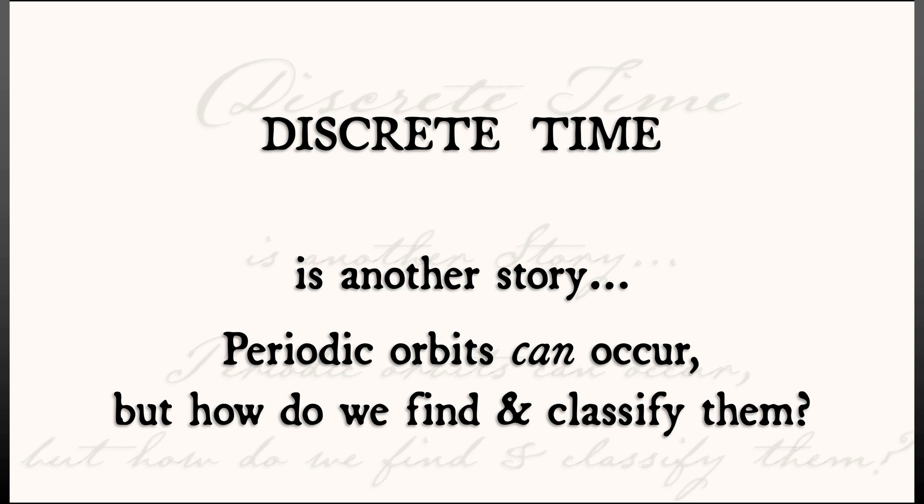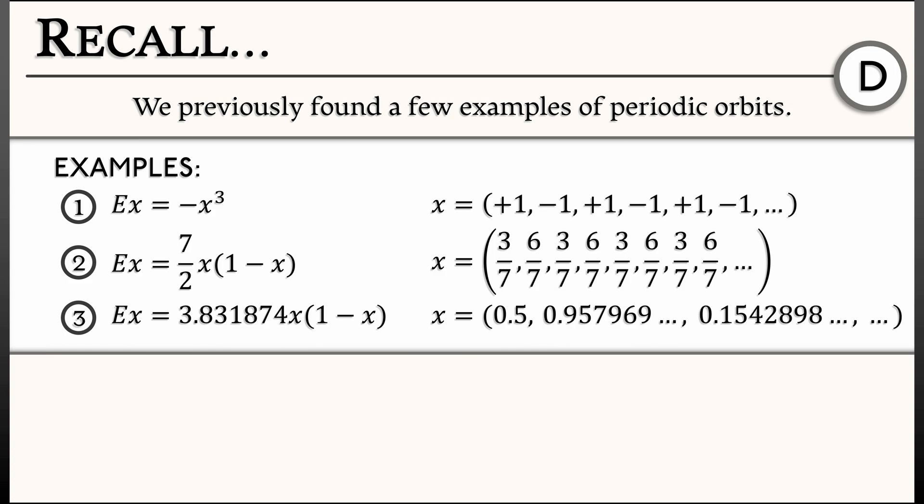Well, recall, we found a few examples of periodic orbits. Really simple ones. Low period, like 2 or 3.